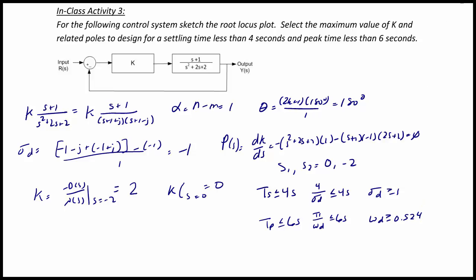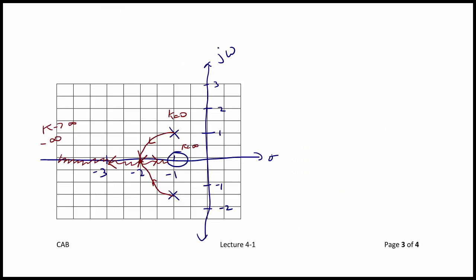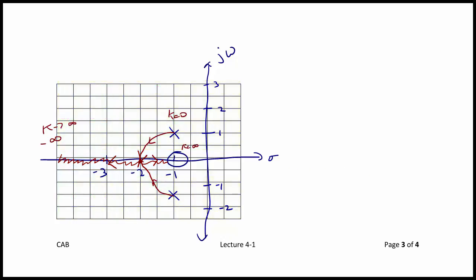The root locus is stable for all k. Since sigma_d ≥ 1 is also always satisfied — k = 0 at sigma_d = 1 and then it moves to the left — we want to design for the omega_d constraint and then confirm that it also satisfies the sigma_d constraint.